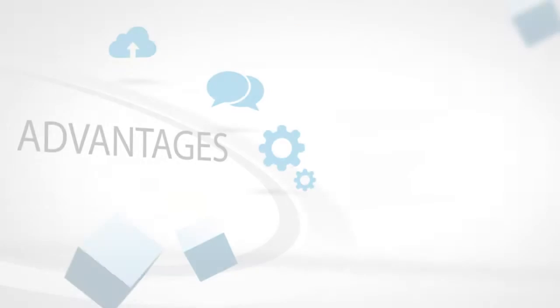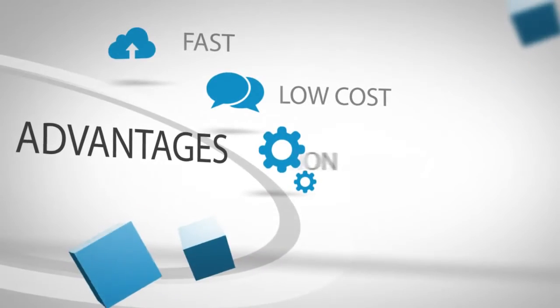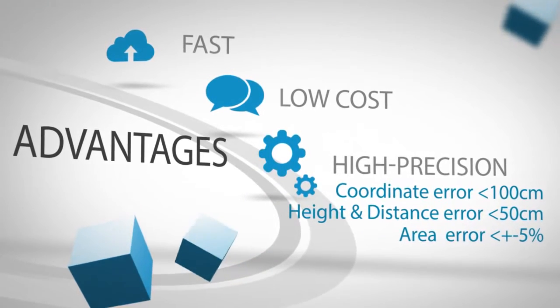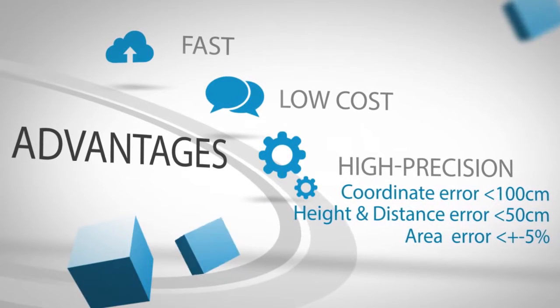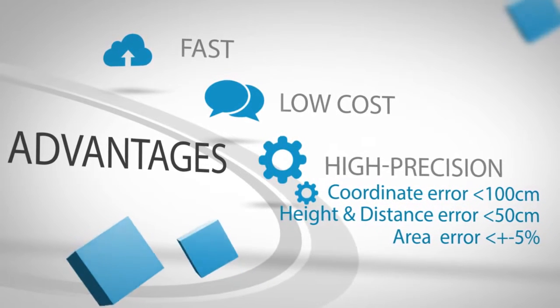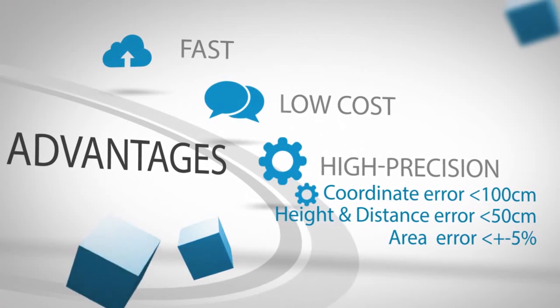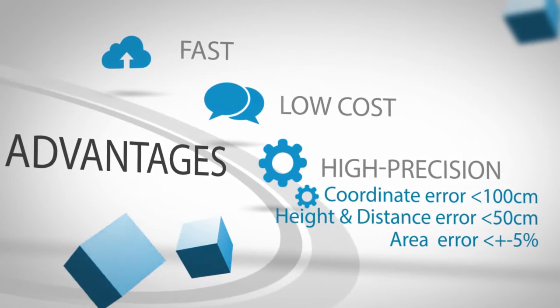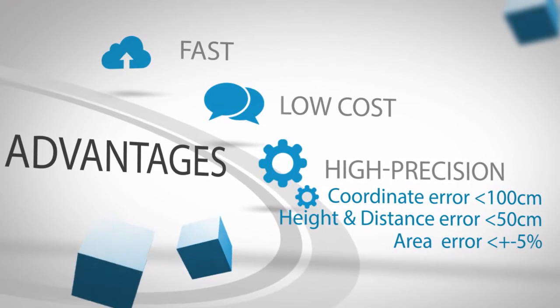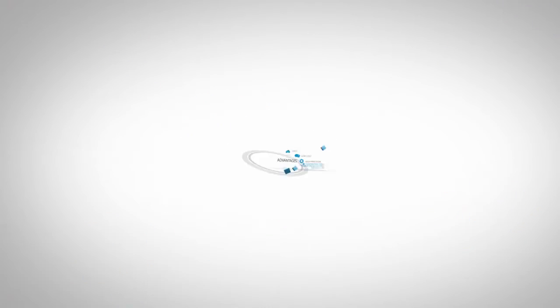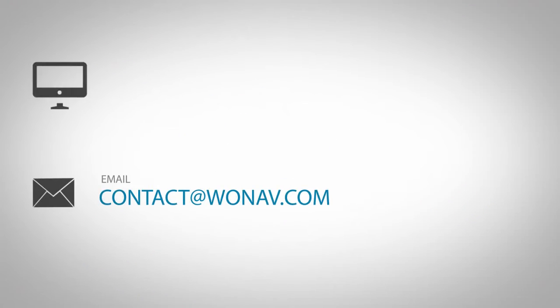The advantages of WONAP CT include being fast, low cost, and high precision. Coordinate error is less than 100 cm, height and distance error is less than 50 cm, and area error is less than plus or minus 5%.